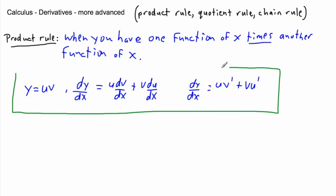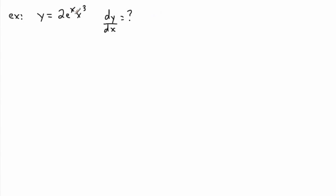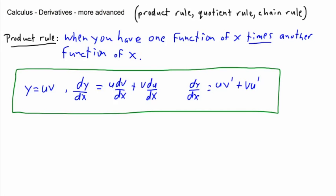Let's use an example to reinforce this. We've got y equals 2eˣ times x³. I have one function of x times another function of x. I can consider u to be 2eˣ and v to be x³ — or I could have written it the other way around with 2x³ as v and eˣ as u, and it would give the same answer. So the derivative will be u·v-prime plus v·u-prime.